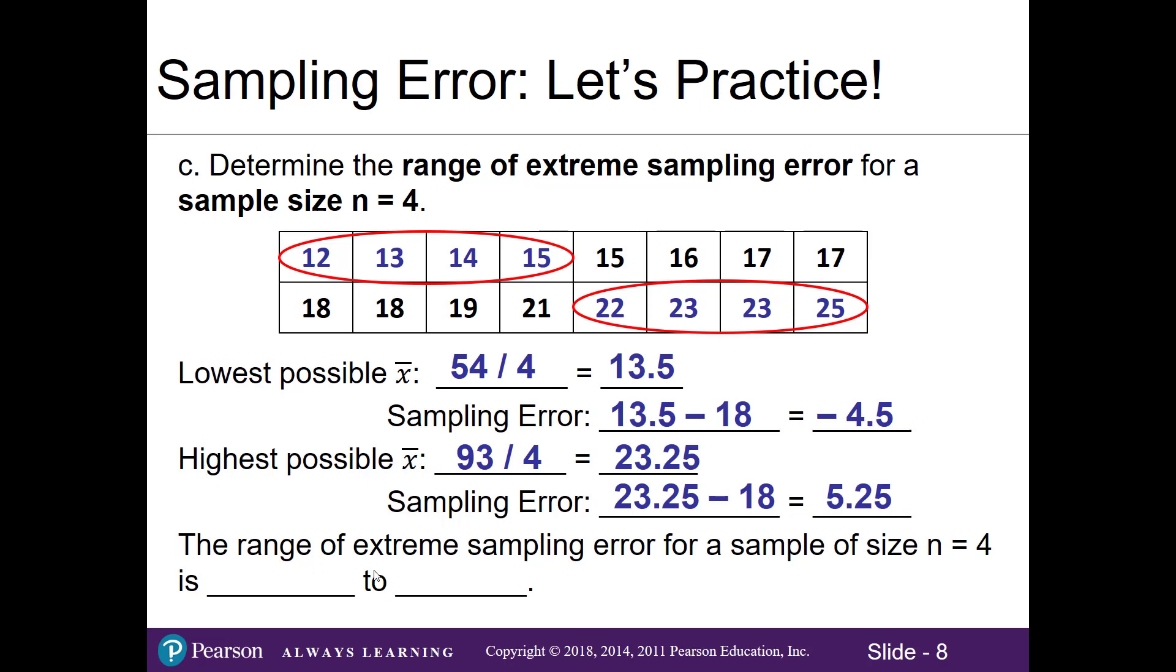The range of our extreme sampling error for a sample size of 4 is negative 4.5 to 5.25. If you have any questions just let me know.